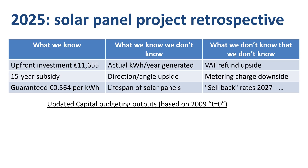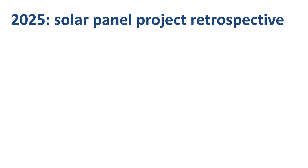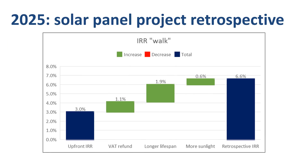Based on all of the above, I recalculated my project economics based on what I know today, translated back to 2009 equivalents at the time of the original investment. The payback period improved from 12 years to 10 years. NPV turns out to be around €4,100 using the same very low 3% discount rate as the original calculations. IRR has doubled to 6.5%, up from just over 3% originally. If presenting this in a company setting, I would show a beautiful IRR walk graph with only greens and no reds.